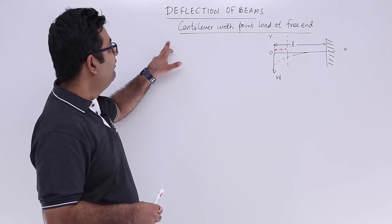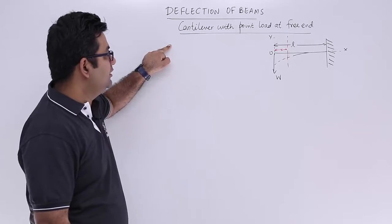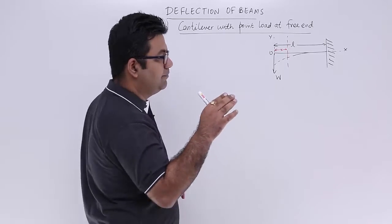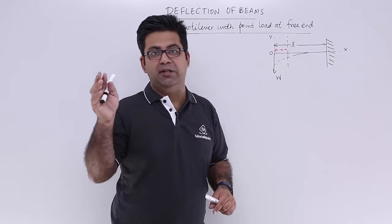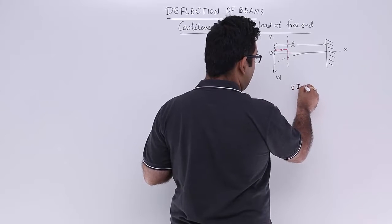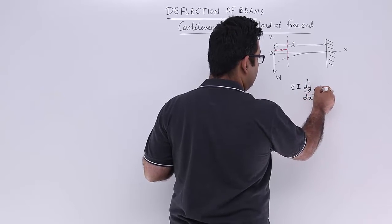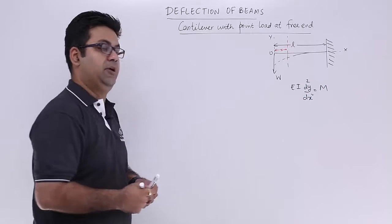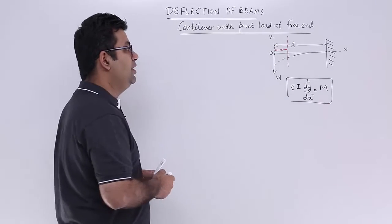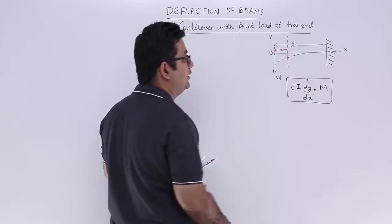Now let's talk about the cantilever with the point load at the free end. In this we will use a method with the help of calculus. You should remember that E times I times d²y/dx² is equal to the bending moment. We will use this expression to find out the deflection at the free end and in general the deflection at any point in this cantilever.